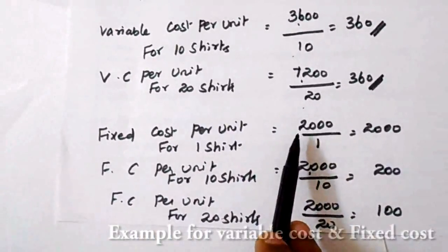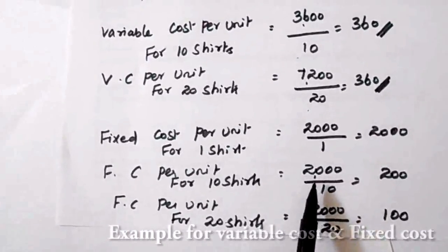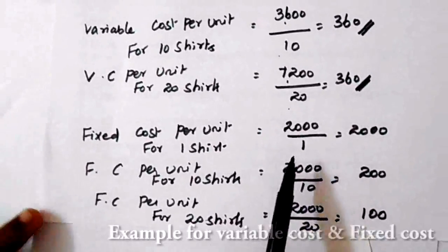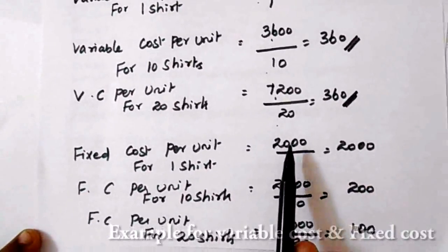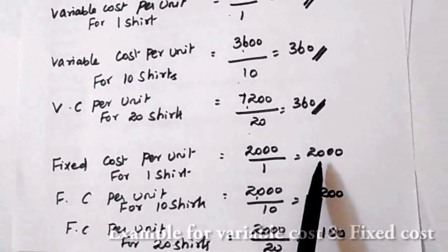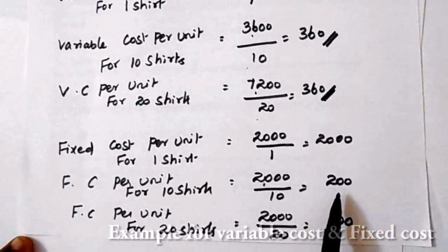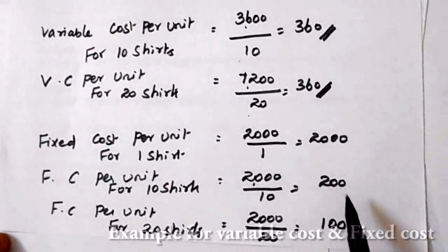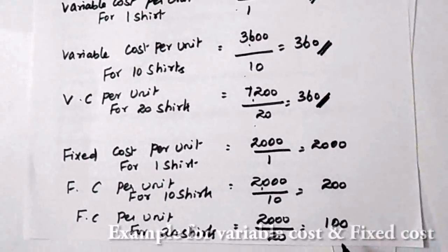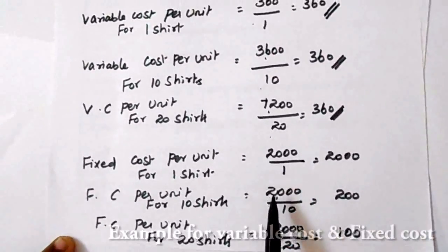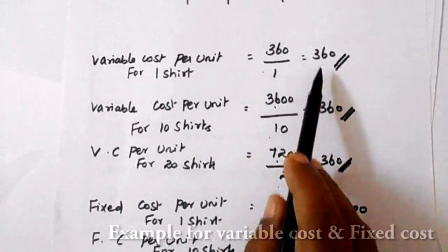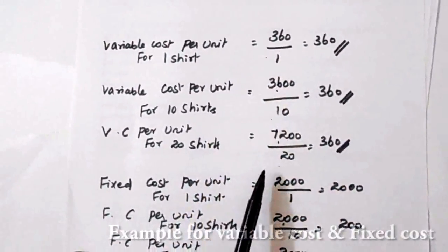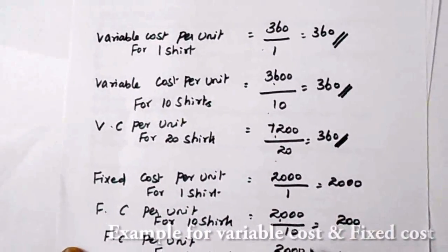In the case of fixed cost, the per unit amount will vary but the total amount remains the same. For one shirt, the sewing machine costs 2000 rupees per unit. For 10 shirts, it becomes 200 rupees per unit. For 20 shirts, 100 rupees per unit. As you increase output, fixed cost per unit keeps decreasing or diminishing, but the total fixed cost amount always remains the same. So: variable cost per unit remains same; fixed cost total amount remains same; variable cost total amount varies; fixed cost amount is always constant.